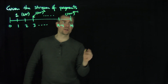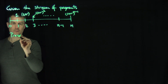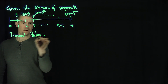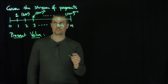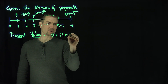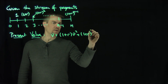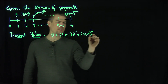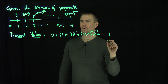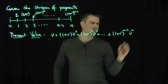So what's the present value of this stream? The present value is given by ν, plus (1+r) times ν squared, plus (1+r) squared times ν cubed, all the way down to (1+r) to the n minus 1 times ν to the n.